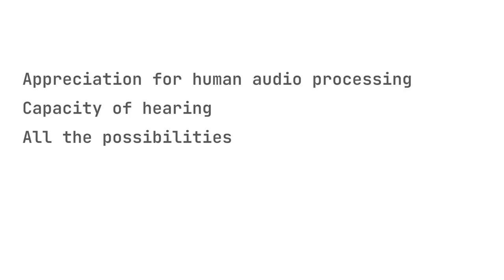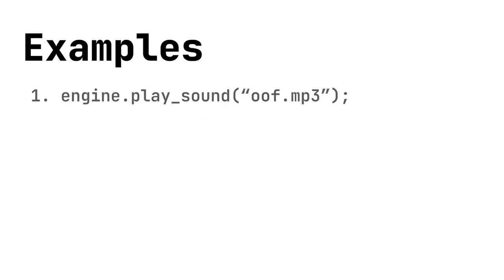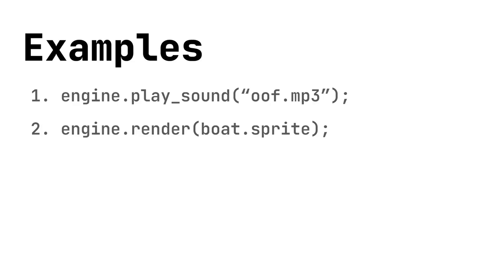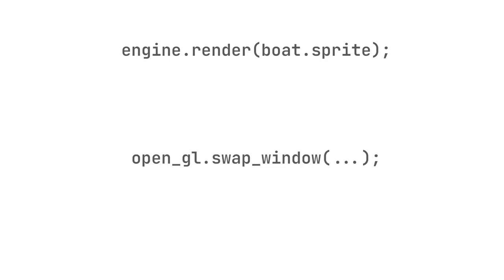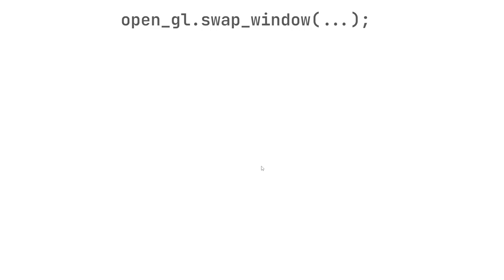That expanded my understanding of how smart sound is and how we perceive it — giving me a lot of ideas. The second example is rendering. An engine gives you a render function or component that tells it what to render. If you go lower level, you'll have an API like OpenGL's swap window — which is just the final step — but a lot happens before that. Let's understand how the regular graphics pipeline works.